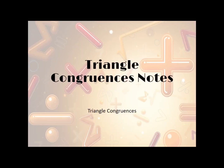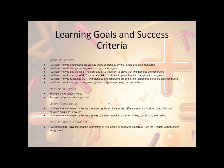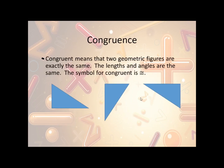Let's take a look now at the triangle congruences notes. The notes begin with the learning goals and success criteria. Now, what is congruence? Congruent means that two geometric figures are exactly the same, meaning that the lengths and the angles are the same. The symbol for congruent is this equal sign with the squiggly on it.